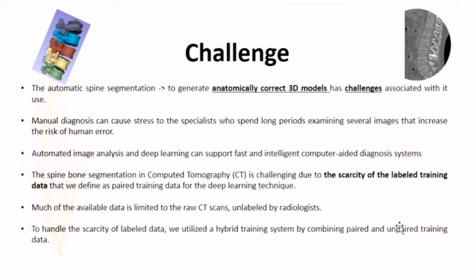But we also have another challenge to do automatic spine segmentation. The challenge is we have the challenge to generate anatomically correct 3D models. If we do manual diagnosis, it will cause stress to the specialist. But if we do automated image analysis using the computer, it's possible, but we need a lot of data to train the model. The performance of machine learning is highly dependent on labeled training data, but most of the available data is limited to raw CT scans unlabeled by radiologists. To handle the scarcity of labeled data, we utilize a hybrid training system by combining paired and unpaired training data.